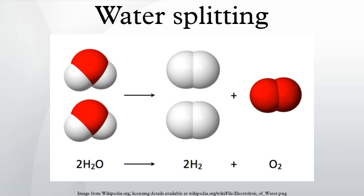Production of hydrogen from water requires large amounts of energy and is uncompetitive with production from coal or natural gas. Potential electrical energy supplies include hydropower, wind turbines, or photovoltaic cells. Usually, the electricity consumed is more valuable than the hydrogen produced, so this method has not been widely used.